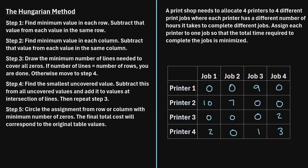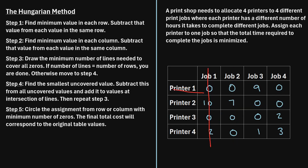Once again, we repeat step three: draw the minimum number of lines needed to cover all the zeros. On this iteration, no matter how you draw the lines, you will need at least four lines to cover all the zeros. Because the number of lines needed equals the number of rows in the matrix, we are done with step three and can jump to the last step, step five.